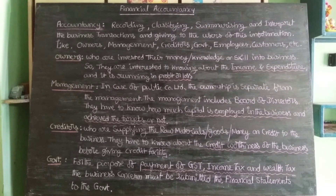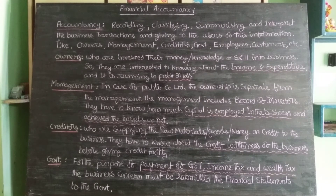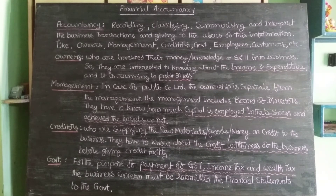What is meant by business transactions? The business transactions include purchases, sales, expenses, incomes, liabilities, assets and so on. So these transactions are first recorded in the books. That book is called the book of primary entry, or day book.